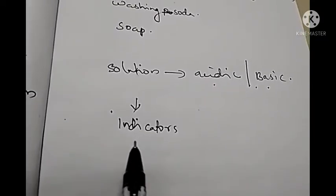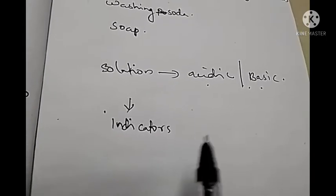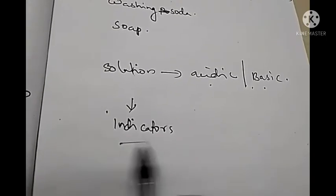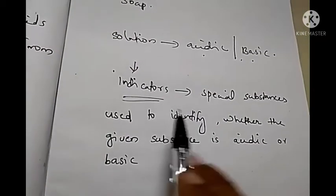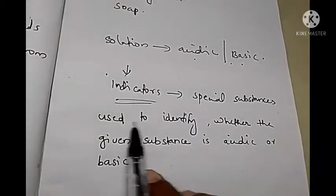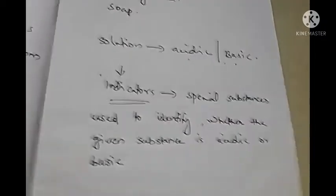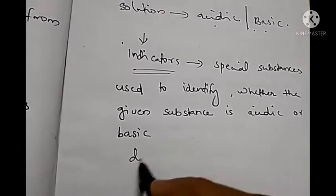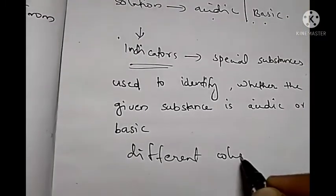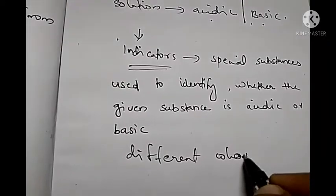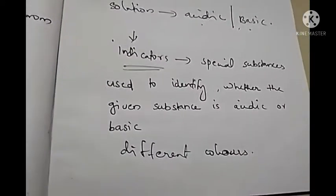The substances we are using to identify whether the given substance is acidic or basic are known as indicators. Indicators are special substances used to identify whether the given substance is acidic or basic. These indicators will give different colors in acidic and basic medium. By observing these colors, we can identify whether the given solution is acidic or basic.